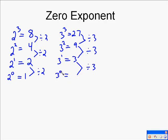And you can do this for any number. You can do this for 4, you can do this for 5, you can do this for 6, you can do it for 7. It's just going to keep going on. And every time you're going to get down, you're going to have 2 to the 0 equals 1, 3 to the 0 equals 1, 4 to the 0 equals 1, and so on.